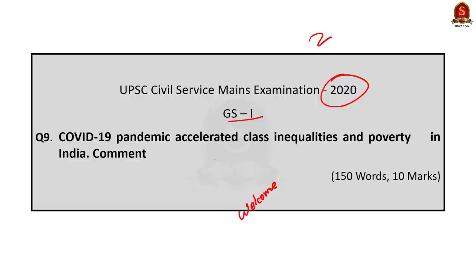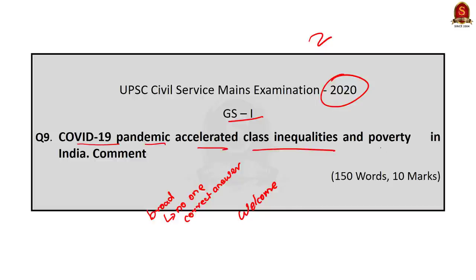The questions I have chosen are very broad-based, so there is no one correct answer. You can approach these questions in multiple ways. Try and post your answers so that it will also educate me about the other ways of approaching the questions. Now let us take up the first question. COVID-19 pandemic accelerated class inequalities and poverty in India. Comment.